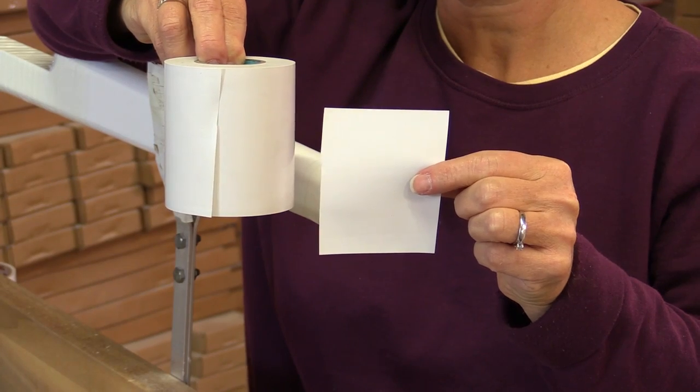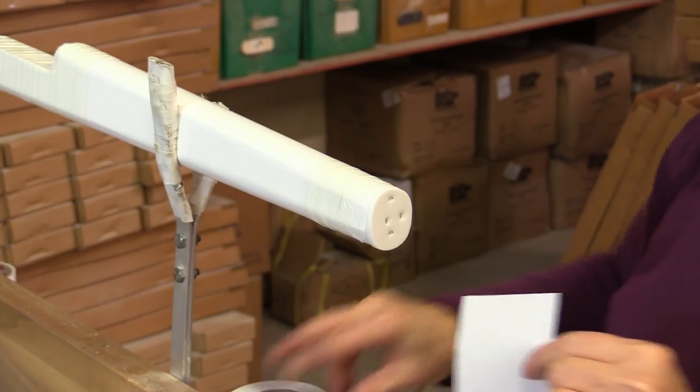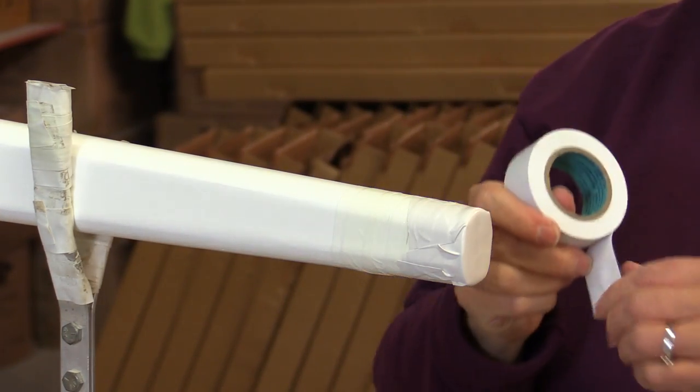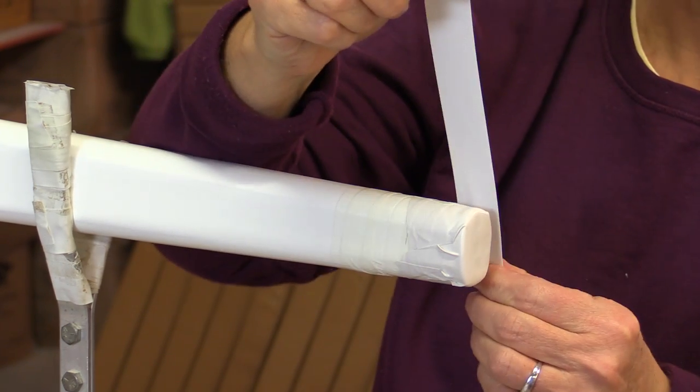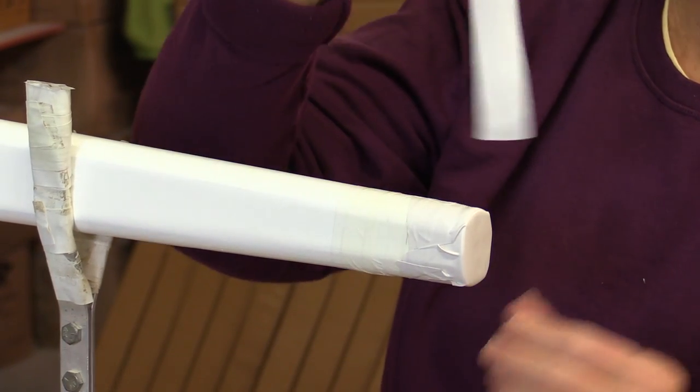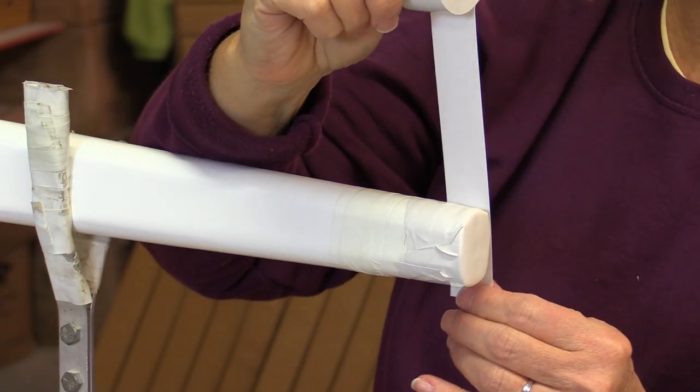And now do the same for the nose end of the rifle. Now we'll recover all the areas we just did with the strapping tape with one inch white vinyl tape. Be sure to get right up against the edge of both the nose and the butt end of the rifle with the white vinyl tape.